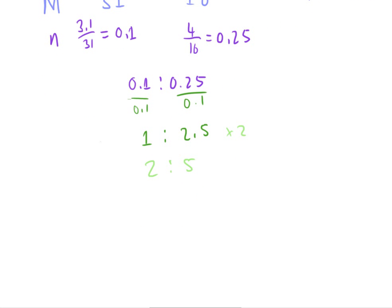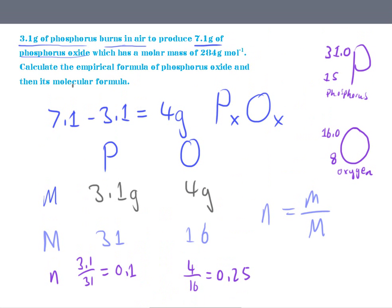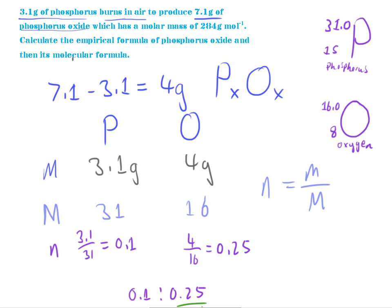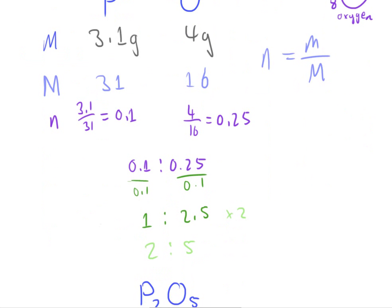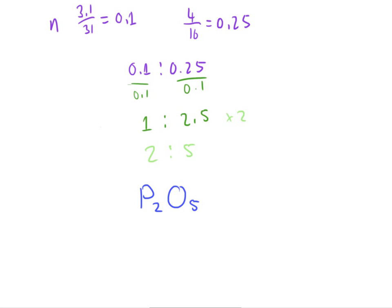And now, since this is the simplest whole number ratio, we can say that the empirical formula of this molecule is going to be P₂O₅. And we don't know the molecular formula yet, but this would be the empirical formula. And as I said in a previous video, we can get the molecular formula from the empirical formula by dividing the molar mass of the actual molecule by the molar mass of the empirical formula which we've calculated.